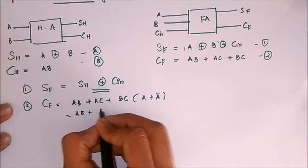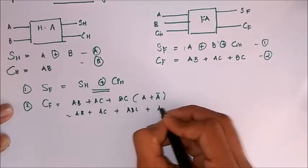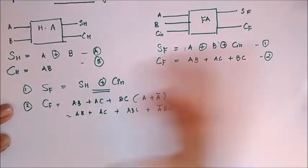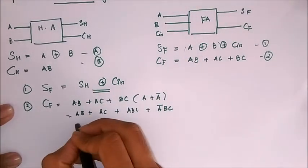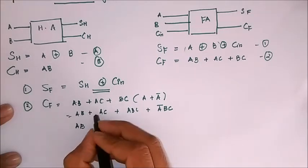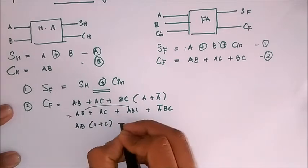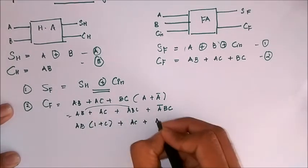First I'm going to multiply BC with A plus A bar. That will give me AB plus AC plus ABC plus A bar BC, right? Just distributing and taking AB as common between these two.